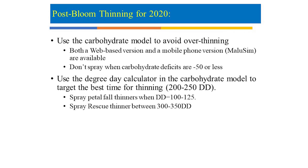Question: what is the base temperature used for the degree day model in the pollen tube growth model? I can't remember at the moment, I think it's 40°F. The degree day model we're using in the carbohydrate model is slightly lower — it's 40°F base, which is about 4.4°C.